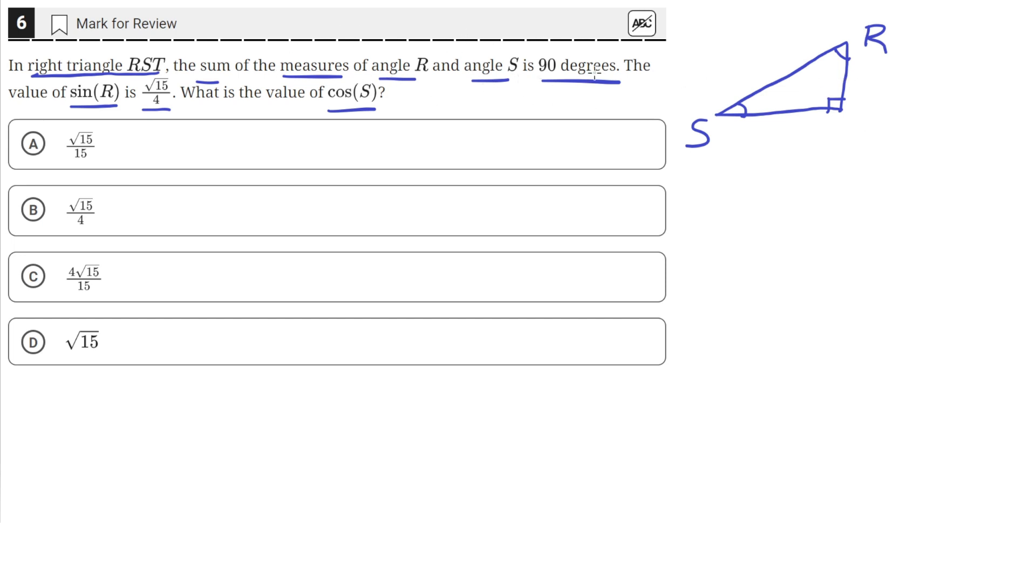Because R and S add up to 90 degrees, R and S have to be either of these two angles. Because if it was this angle in here, this is already 90 degrees. So that would be saying the other angle is 0 degrees, and in that case we wouldn't have a right triangle.